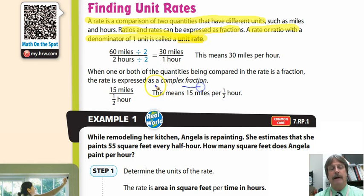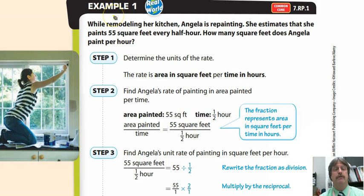Here they're talking about a complex fraction. It is a fraction over a fraction, or you can take an integer over a fraction or vice versa. This person is going to go 15 miles every half hour. Example one is really great.